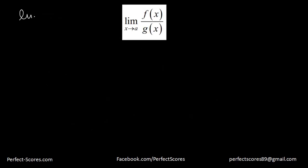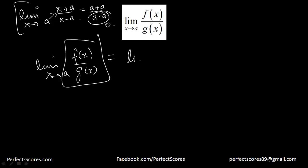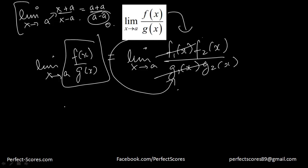Usually in your limit questions, you are going to get two functions. Suppose limit x tends to a of (x + a)/(x - a) — something like that. The function would be framed so that if you plug in the value of a, you get 0 in the denominator. That does not mean the limit does not exist or tends to infinity. It means f(x) and g(x) have something in common, so you can break them into f1(x)·f2(x) and g1(x)·g2(x), eliminate common factors, and get a finite result. We are going to do a lot of questions on that.